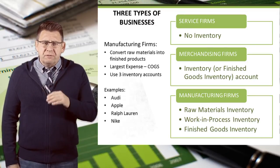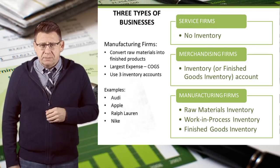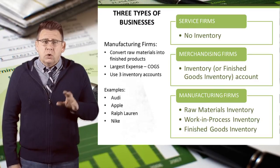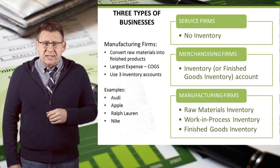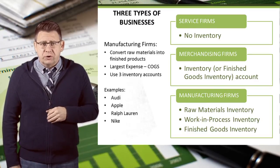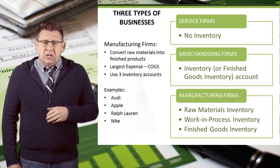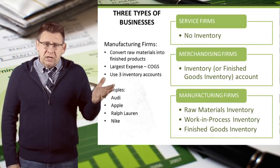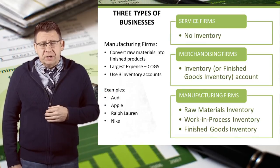Manufacturing firms use three inventory accounts: raw materials, work in process, and finished goods inventory. You can see some examples of manufacturing companies here, but clearly there are many more.